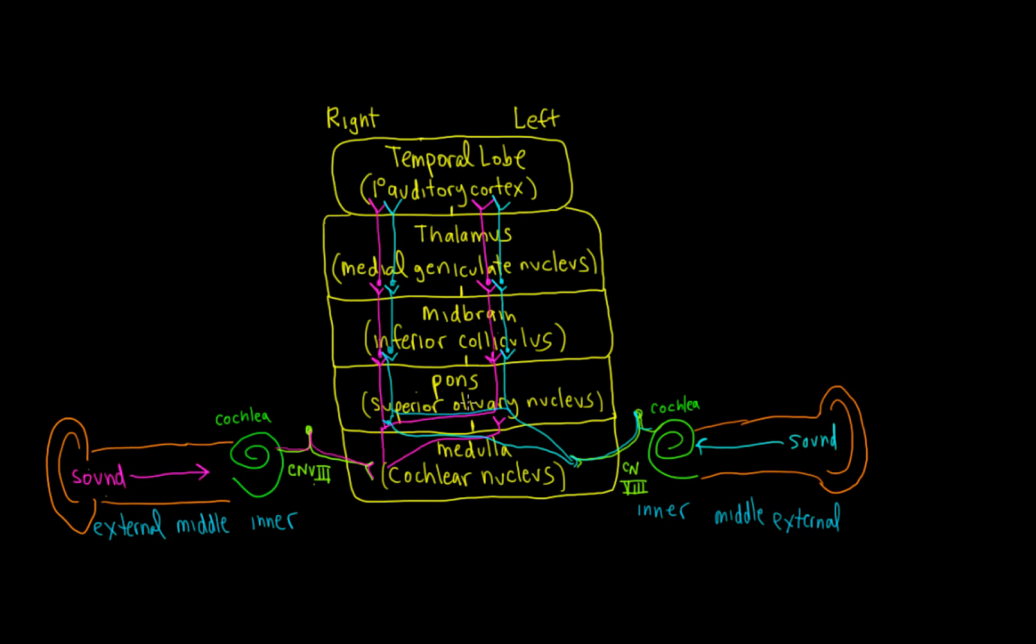We have the thalamus—both medial geniculate nuclei—both inferior colliculi, and both superior olivary nuclei. So it's bilateral.